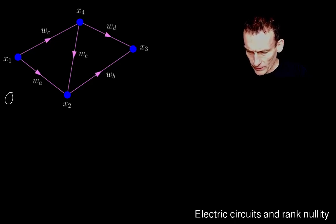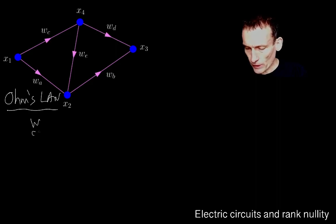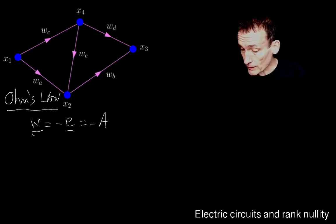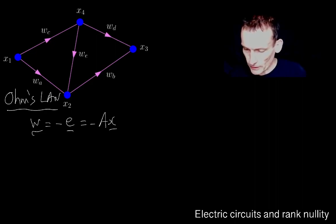Now, we learnt last time that Ohm's law says that if I call w the vector of currents in the nodes, then it turns out, because the conductance is all 1, this is just equal to minus the vector of potential differences, which is defined to be A times x. That's what Ohm's law told us for this unit conductance circuit.